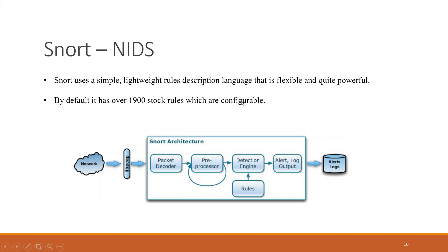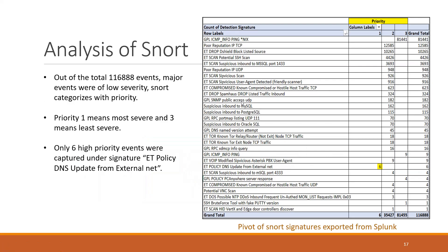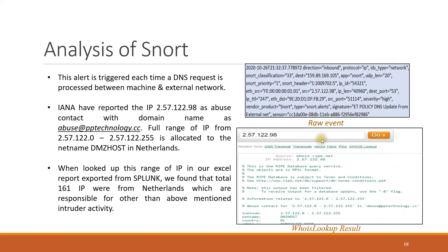By default it has over 1,900 stock rules which are configurable. For the Snort analysis, I pivoted events by priority — priority one means most severe and priority three means least severe. Out of a total of around 16,000 events, major events were of low severity. Only six events were captured under the signature 'ET Policy DNS Update from External Net.' This alert is triggered each time a DNS request is processed between the machine and an external network.